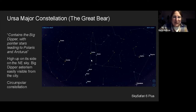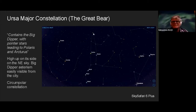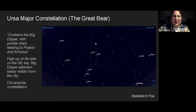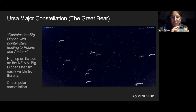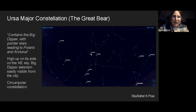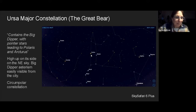Ursa Major is a bear. The head is at the front and it has paws, but the part everyone knows is an asterism — not the full constellation. The sickle was an asterism for Leo in the same way. The Big Dipper is an asterism for Ursa Major because those stars are really bright and clearly visible. One of the most important things about the Big Dipper is that we use it as a pointer to Polaris and further to Arcturus.